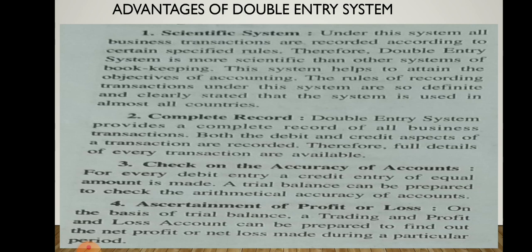The third point is a check on the accuracy of accounts. For every debit entry, a credit entry of equal amount is made. A trial balance can be prepared to check the mathematical accuracy of accounts. In every transaction, two aspects are involved — the debit side and the credit side — and both amounts should be equal. We can easily check this through the trial balance.